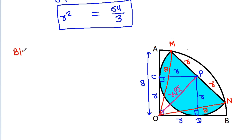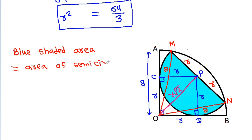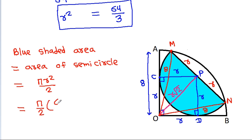The blue shaded area equals the area of the semicircle = πR²/2 = (π/2) × (64/3) = 32π/3.